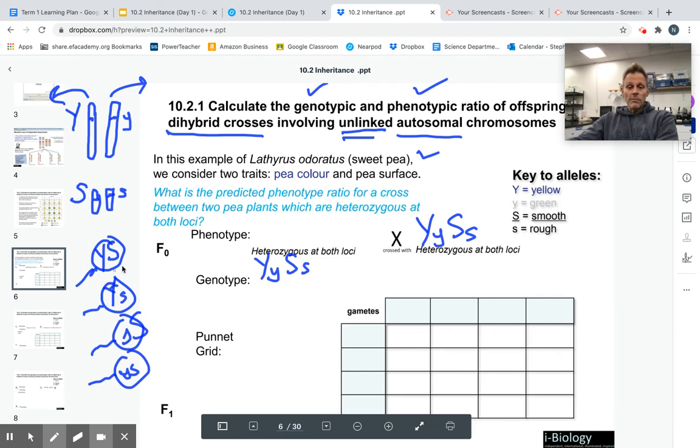When we're determining our gametes, which we already did here, we just write it out. Like one sperm, if this is a male, could be big Y, big S. But it also could be big Y, little s. Or it could be little y, big S. Or it can be little y, little s.